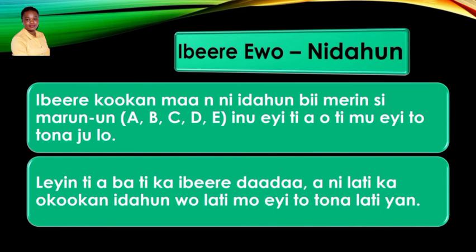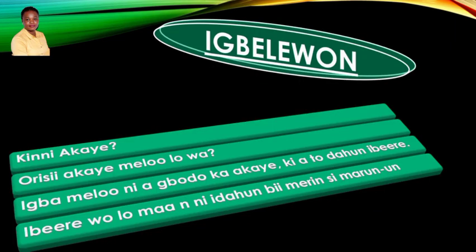If you have read the questions, you should be able to answer them appropriately to find the right answer. When reading comprehension questions, you may have up to 4 or 5 options to consider. Understanding the question types helps you respond correctly.